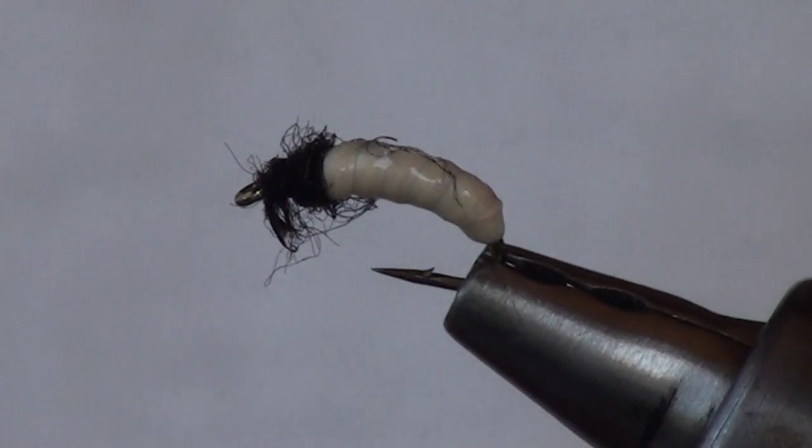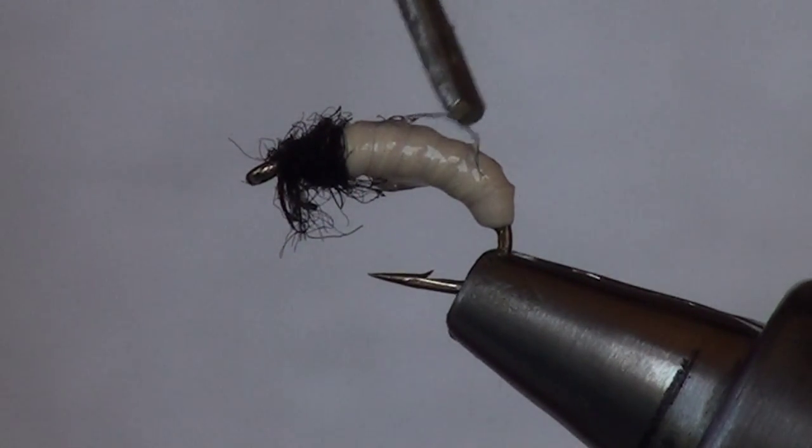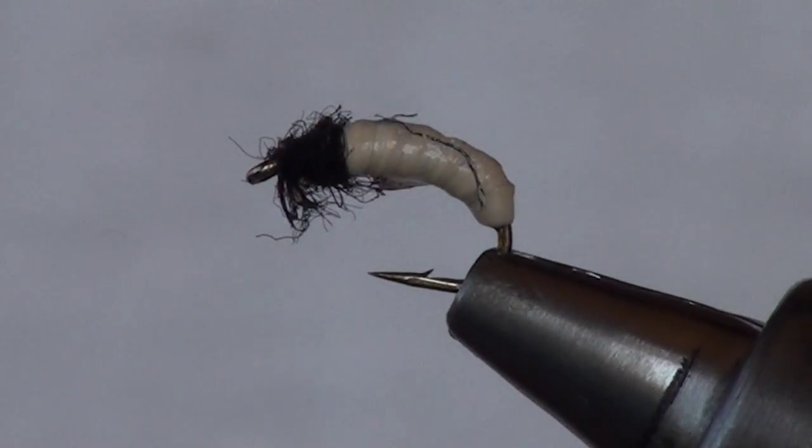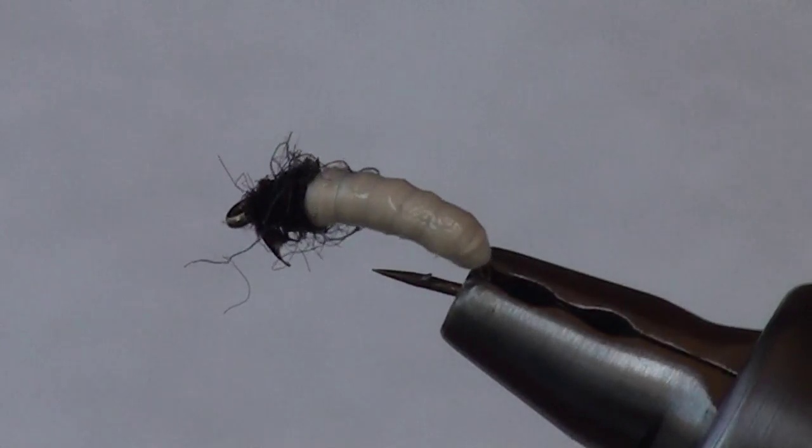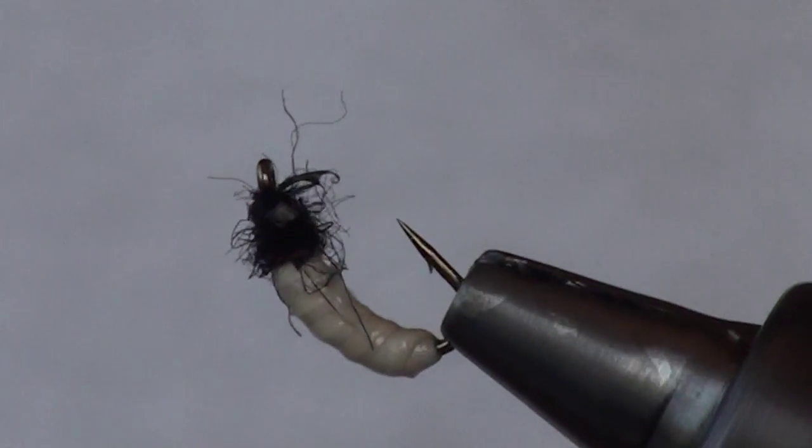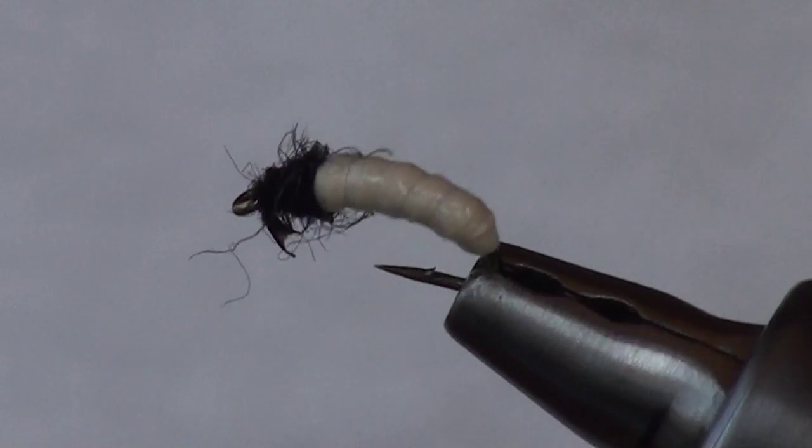Let that dry. We've got a couple fibers. Cut away there. There we go. And there you have it. Rubber band caddis.